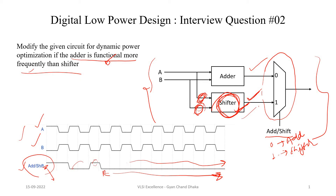Now let's see the solution. Our idea is to reduce or minimize the toggling of the shifter input signal whenever the shifter output is not being used. If the input at the shifter does not toggle, the activity of the shifter will be reduced, and hence dynamic power will also be reduced.